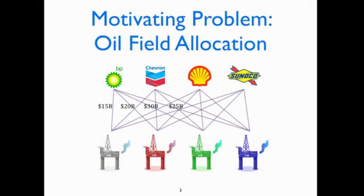For example, maybe this gray oil field is one on the Caribbean Sea, and BP is still troubled by the oil spill accident a few years back. So BP has less incentive for getting another oil field in the Caribbean Sea. And maybe Shell has done extensive research on the field and figures the amount of oil stored is actually much larger than everyone else thinks, so Shell has more incentive for getting the field.